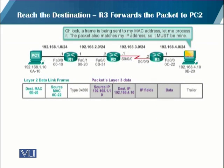When the packet finally reaches PC2, PC2 receives it at its MAC address and processes it. Upon finding that the destination IP address matches PC2's own IP address, PC2 determines it does not need to forward the packet — it is the intended destination.